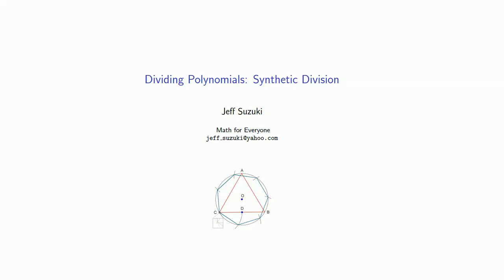In general, when we find the quotient of two polynomials, we have to use long division. But in certain very specialized cases, we can use what's known as synthetic division. Synthetic division is a shorthand form of long division.